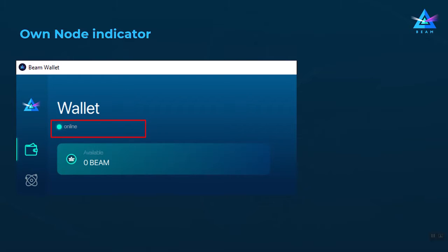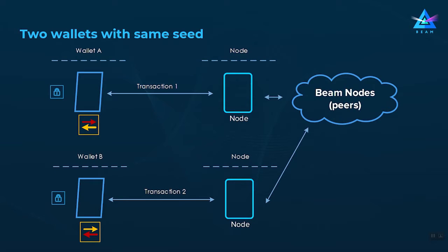This also explains why it's not a good idea to have two wallets with the same seed running at the same time. Since both Wallet A and Wallet B use the same owner key to track their UTXOs, if Wallet A creates a transaction spending some UTXOs, Wallet B doesn't know about it and may try to spend the same UTXOs later — which will fail. Even if both wallets are connected to an own node, the local transaction histories will not match, causing balance discrepancies, which is why we don't recommend it.